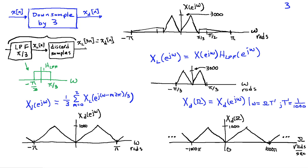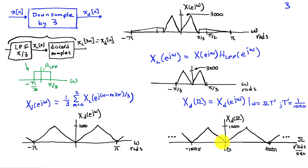We can convert x_d(e^{jω}) to a Fourier transform using the mapping lowercase ω = uppercase Ω times the sampling interval. Since we've downsampled by a factor of 3, the sampling interval is now 1/1000. The Fourier transform shows that what was at π in lowercase ω maps to the Nyquist frequency of 1000π, since ω_s′ = 2000π.